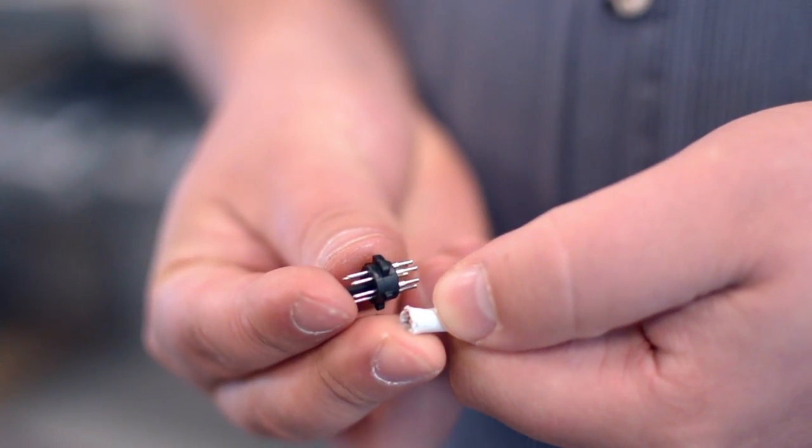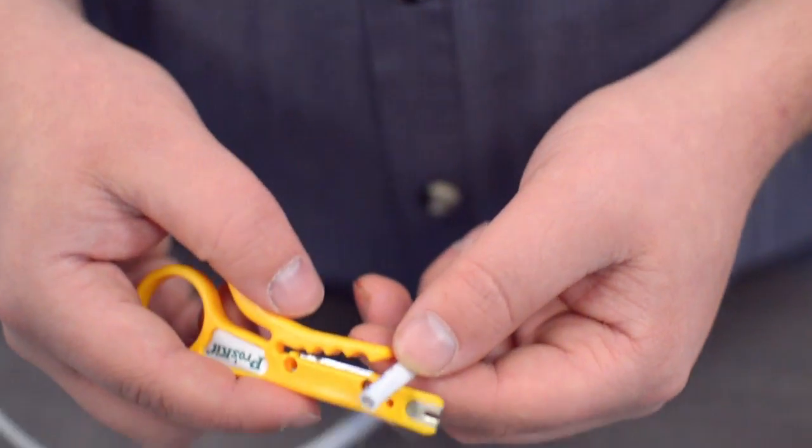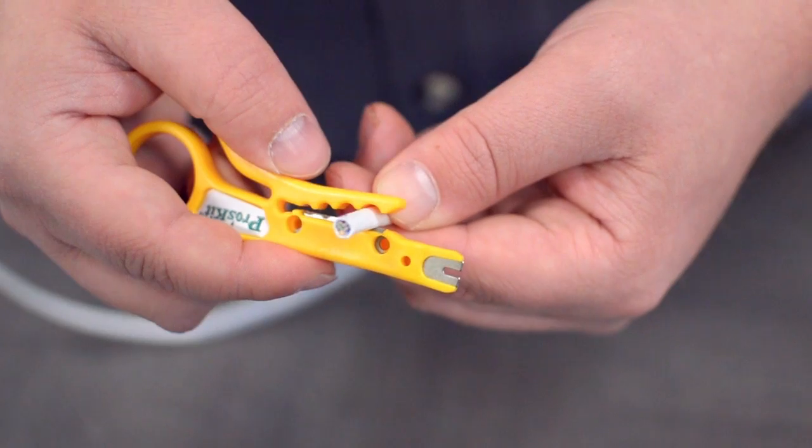Measure how far you will need to strip back the jacket by holding the cable up against the base of the connector. Then, strip the cable jacket using the wire strippers.